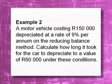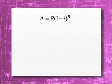The next example we're going to do together is on depreciation. A vehicle costing 150,000 depreciated at a rate of nine percent per annum on the reducing balance method. Calculate how long it took for the car to depreciate to a value of 60,000.